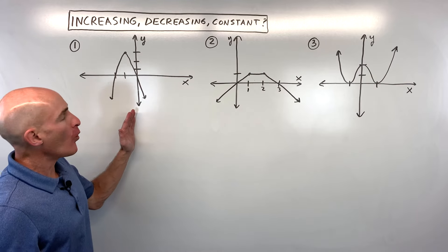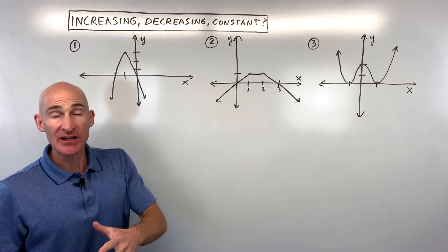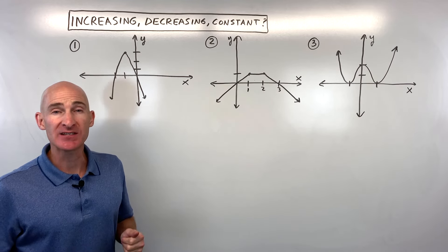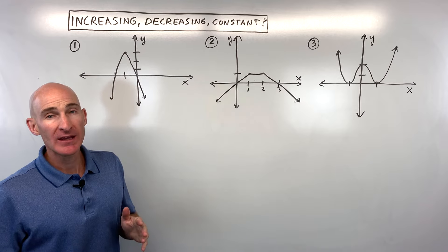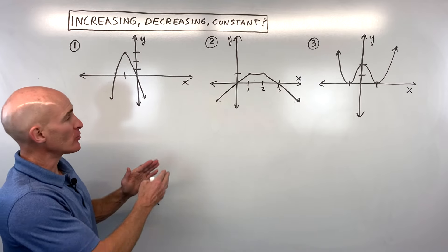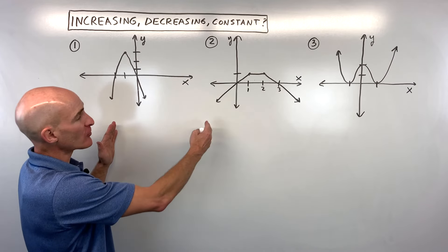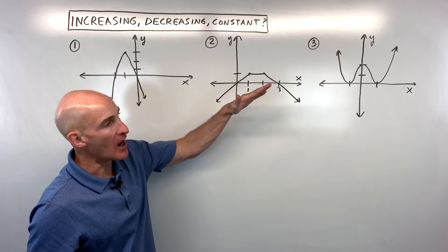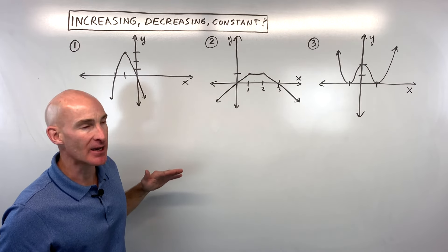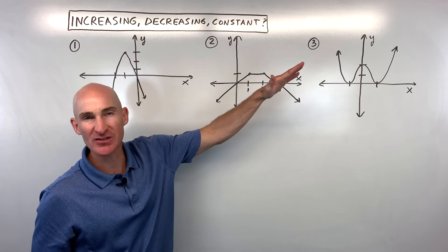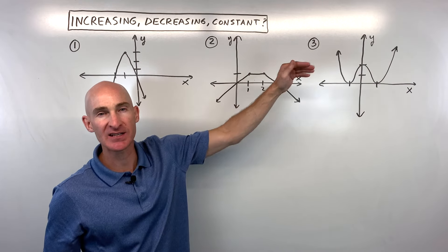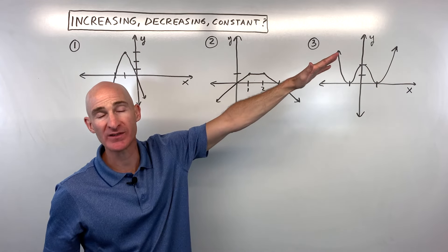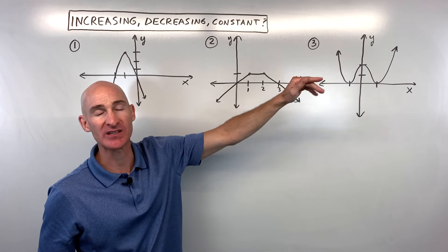First of all, what do we mean when we say the graph is increasing or decreasing or constant? Well, increasing is like reading a book. When you read from left to right, you're looking at where the graph is going up to the right. It's almost like it has a positive slope in a sense. It doesn't have to be a constant slope, but it's going up to the right — we say that's increasing.